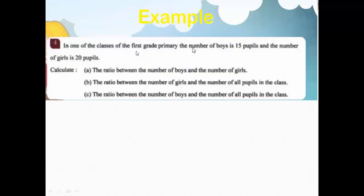In a class of first grade primary, the number of boys is 15 and the number of girls is 20. Calculate: A) the ratio between the number of boys and the number of girls; B) the ratio between the number of girls and the number of all people in the class; C) the ratio between the number of boys and the number of all people in the class.